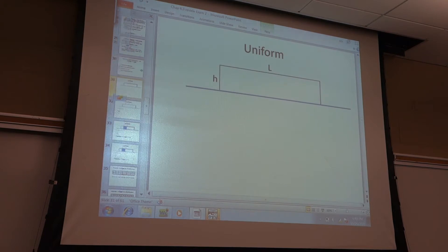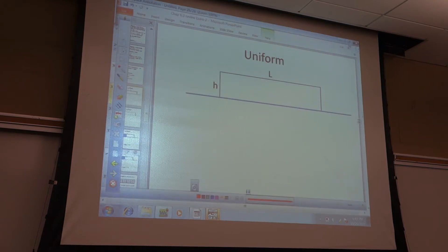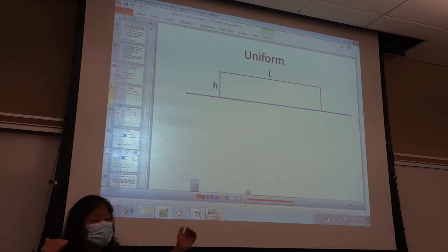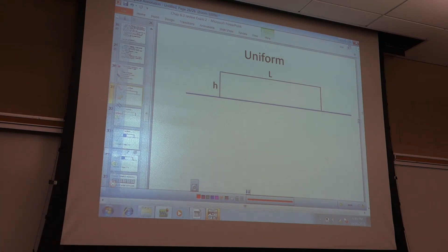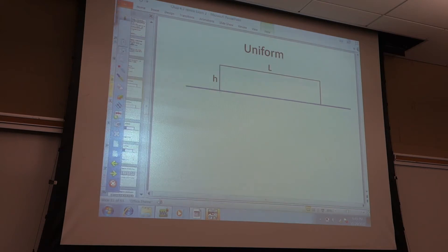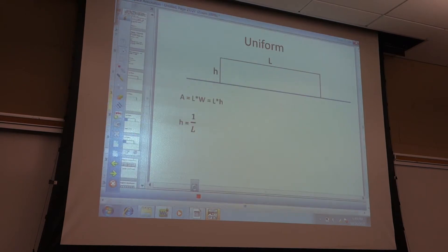So first is uniform — it's the rectangle one. The big L is your length and the little h is your height. What do we know about it? We know that the area is equal to the length times the height.